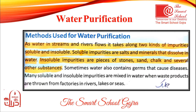Insoluble impurities include pieces of rock, sand, chalk, and other substances found in water. Whether water flows through soil or ash, it picks up these insoluble particles. The purpose of this chapter is that we need to remove these impurities — both soluble and insoluble.